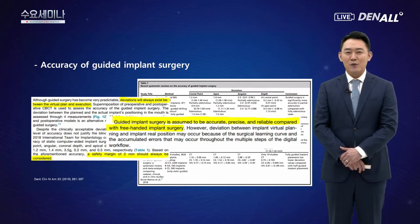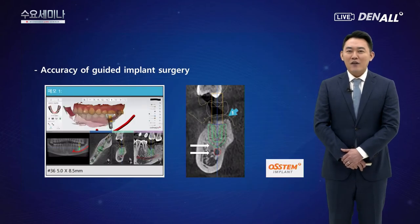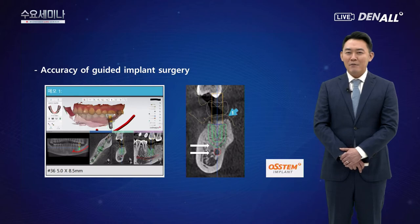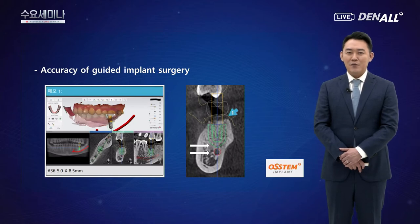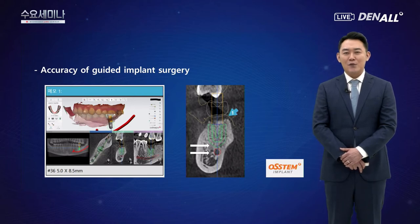원가이드 수술 리포트에는 임플란트 시술 시 안전 영역이 표시됩니다. 임플란트 픽스처를 둘러싸고 있는 녹색 선이 세이프티 마진이며, 임플란트 스튜디오 프로그램으로 디자인 시 하치조 신경관과 안전 영역이 중첩될 경우 경고 메시지가 뜨면서 디자인 수정이 필요하다고 안내합니다. 이런 과정들을 거쳐 안전하게 시술할 수 있도록 하고 있습니다.